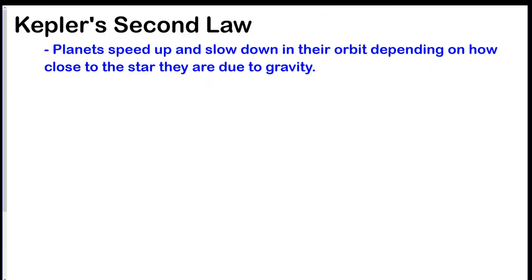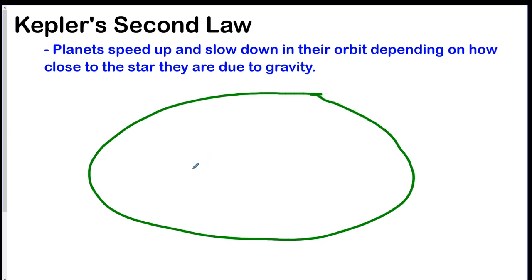Now we're moving on to Kepler's second law. Now there is a mathematical definition of this law, but we're just going to do quick content. So the idea is that planets speed up and slow down in their orbits depending on how close to the star they are due to gravity. So I call this the gravity law. So imagine we're going to draw a little sketch. So we'll draw an orbit. And remember it's got two foci.